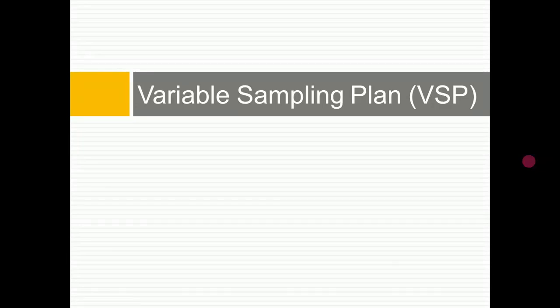Hello everyone. Today we will take a new topic, which is the Variable Sampling Plan. Everything we did previously was under the Attribute Sampling Plan. If we have a discrete quality characteristic, then we use the Attribute Sampling Plan, where we classify units into conforming and non-conforming and count the number of defective items. But if we have a continuous quality characteristic, then we work with a variable sampling plan, because we take measurements rather than counting defects.